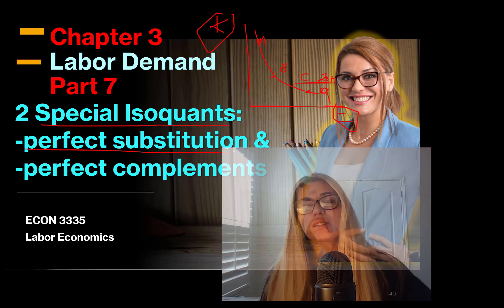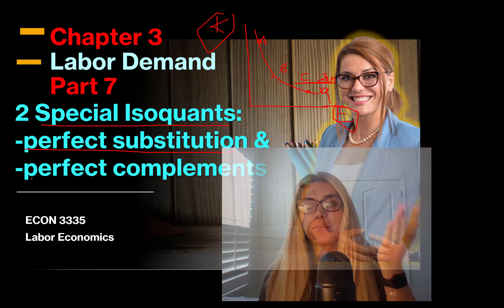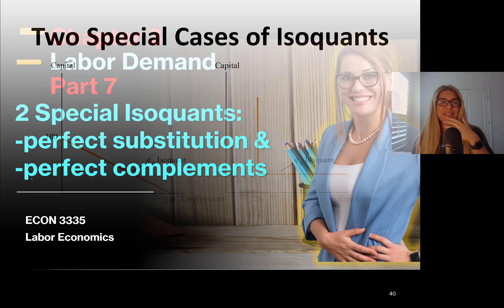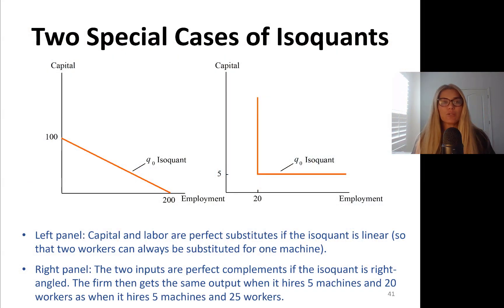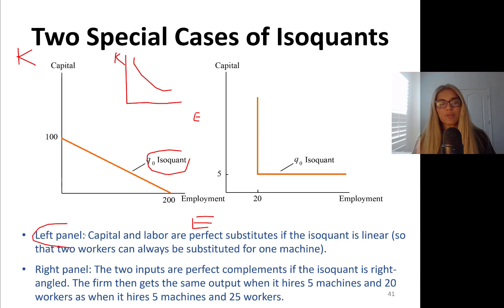We are going to talk about perfect substitutes in production and perfect complements in production. We are talking about inputs or factors of production, capital and labor in this case being perfect substitutes or complements. So if you look at the left-hand side, capital, labor, employment, this is an isoquant. Normally isoquants look like they look like this labor capital, but this is a straight line, downward sloping. So this is an example of, left panel is an example of capital and labor being perfect substitutes.